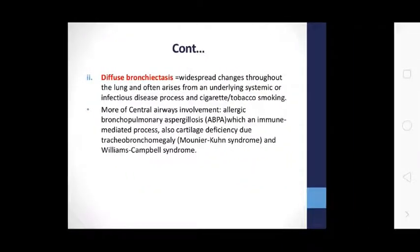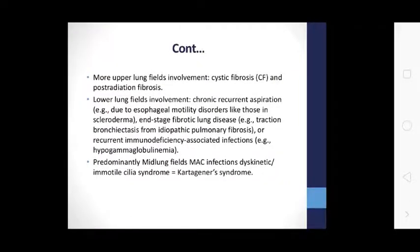Diffuse bronchiectasis shows widespread changes throughout the lung and often arises from an underlying systemic or infectious disease process. More central airway involvement includes allergic bronchiectasis and immune-mediated processes, as well as cartilage deficiency due to tracheobronchomegaly, Mounier-Kuhn syndrome, and Williams-Campbell syndrome. Upper lung field involvement includes cystic fibrosis and post-radiation fibrosis. Lower lung field involvement includes chronic recurrent aspiration, such as from esophageal motility disorders like scleroderma, and fibrotic lung disease.